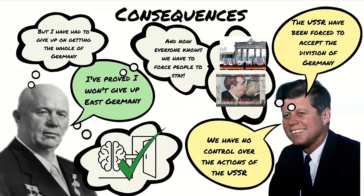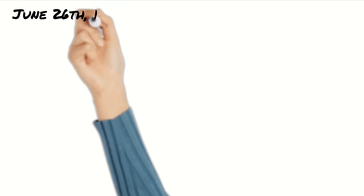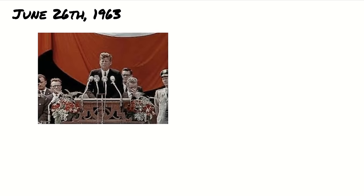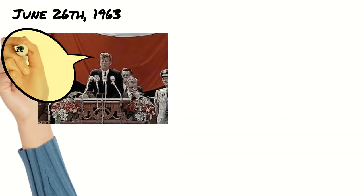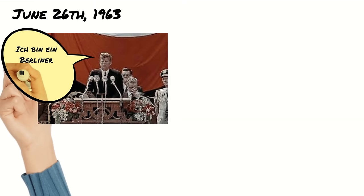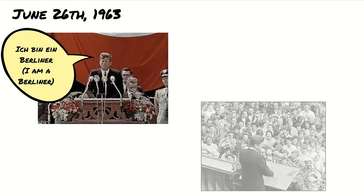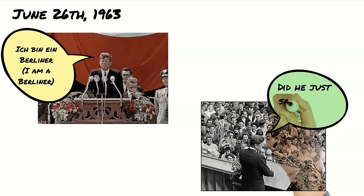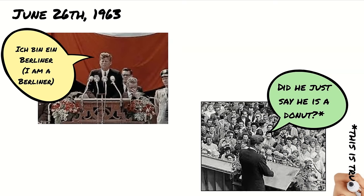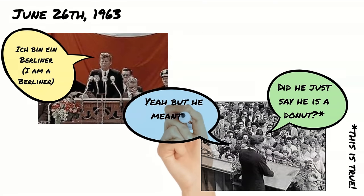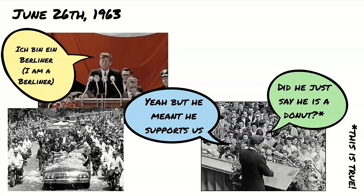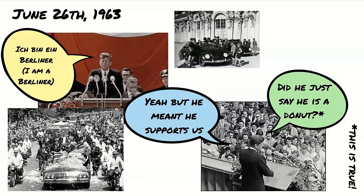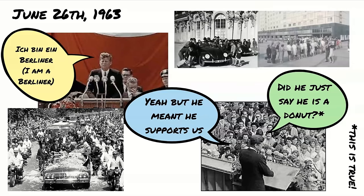In 1963, US President Kennedy made a historic visit to Berlin. He gave a speech and famously declared, 'Ich bin ein Berliner' — I am a Berliner. This speech was a strong show of support for the people of West Berlin and a message to the Soviet Union that the United States would not back down in the face of communist aggression. He was greeted with cheering crowds and showered with flowers. His visit gave the West Berliners an opportunity to celebrate their freedom in contrast to the restrictions of East Berlin.